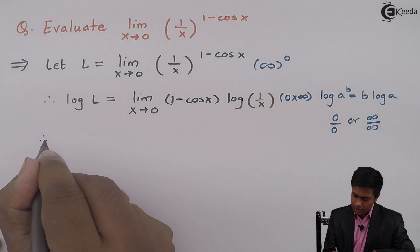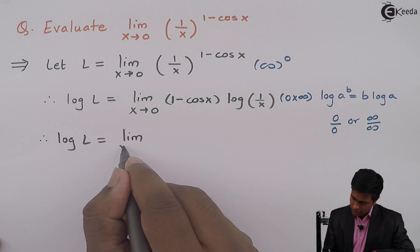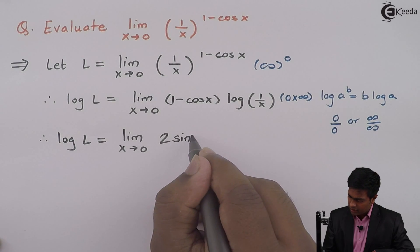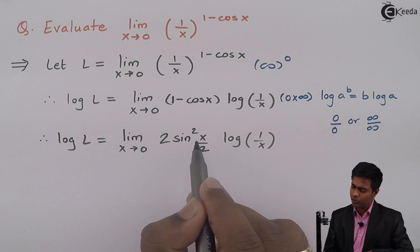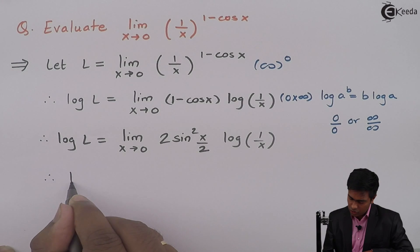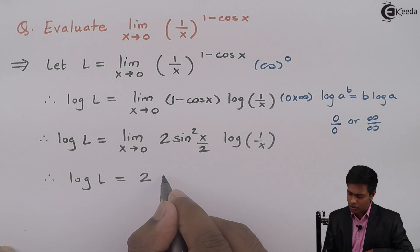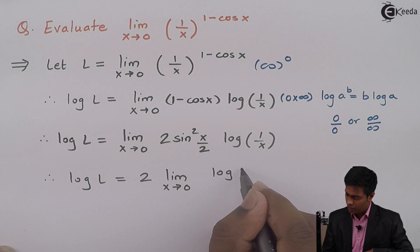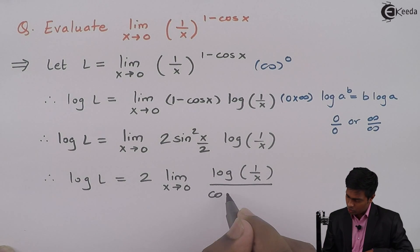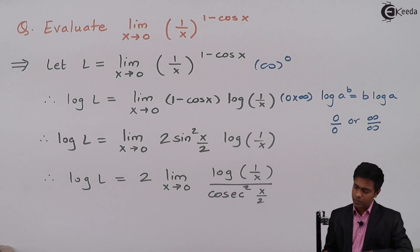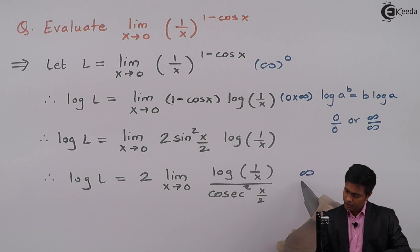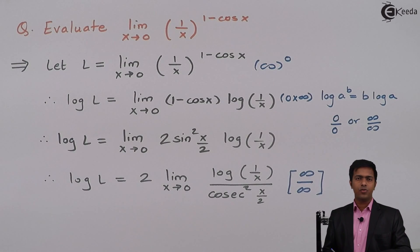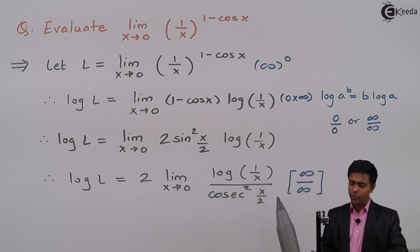So therefore log of L equals limit x tends to 0 of 2·sin²(x/2) into log(1/x). Taking 2·sin²(x/2) into the denominator, and noting 2 is a constant that can come outside, we get: log of L equals 2 times limit x tends to 0 of log(1/x) upon cosec²(x/2). Checking this: log(1/0) is infinity and cosec(0) is also infinity, so we now have the ∞/∞ form and can apply L'Hôpital's rule.